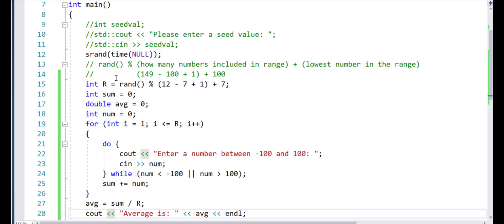After I generate that random number in R, what I need to do is generate the solution with a for loop that needs to run for R times. That means whatever that random number is within the range of 7 through 12 inclusive, the loop has to run for that many times. That's why I'm starting at 1, and I'm stopping at R, less than equals to R.